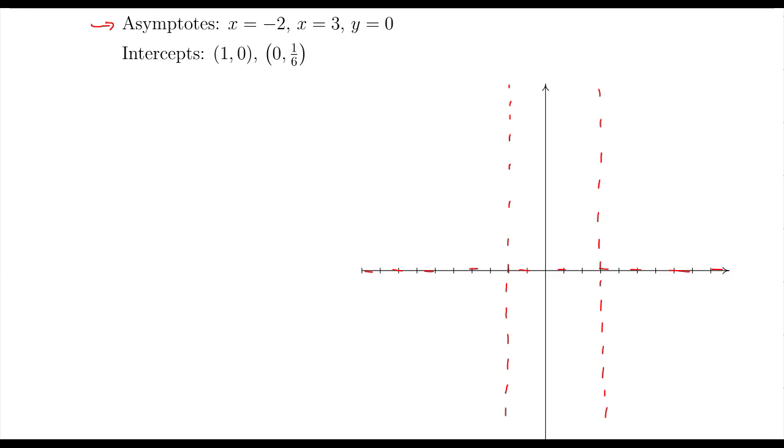We're going to need to find four test points, two for each vertical asymptote. Let's plot the intercepts real quick before we do that. So we have an x-intercept at one zero.